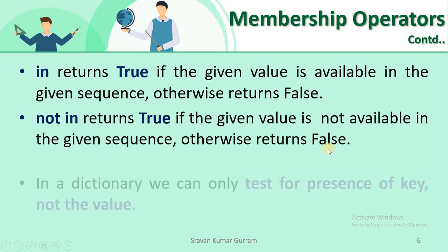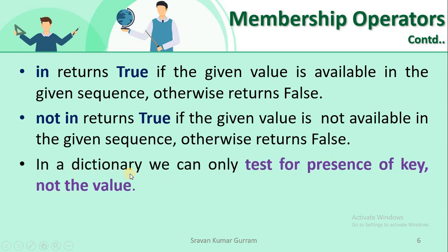In a dictionary, we can only test for the presence of a key, not the values. If you want to check whether a value is available in a given dictionary, we can only check for the presence of keys, not for the values. I will show you this point practically.